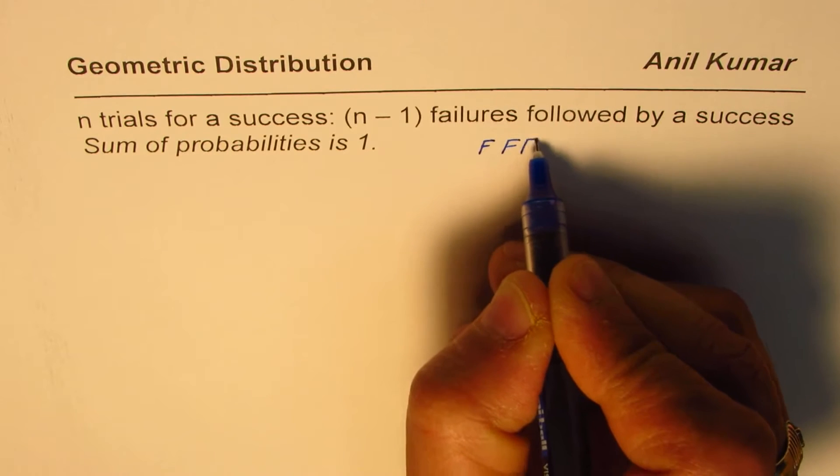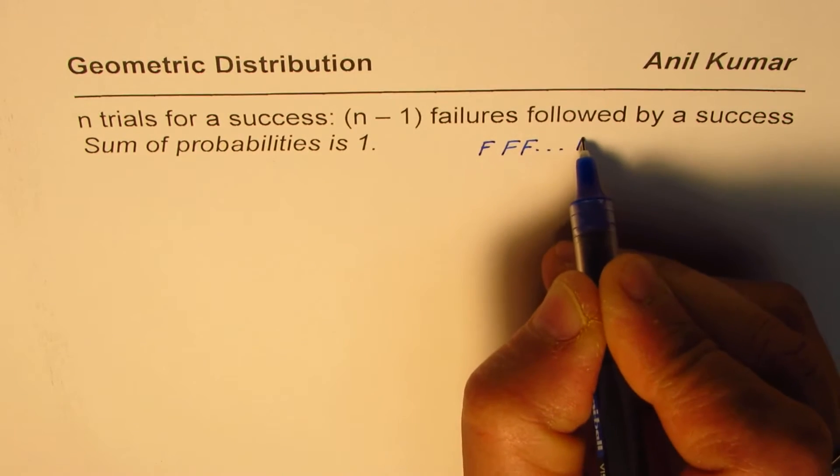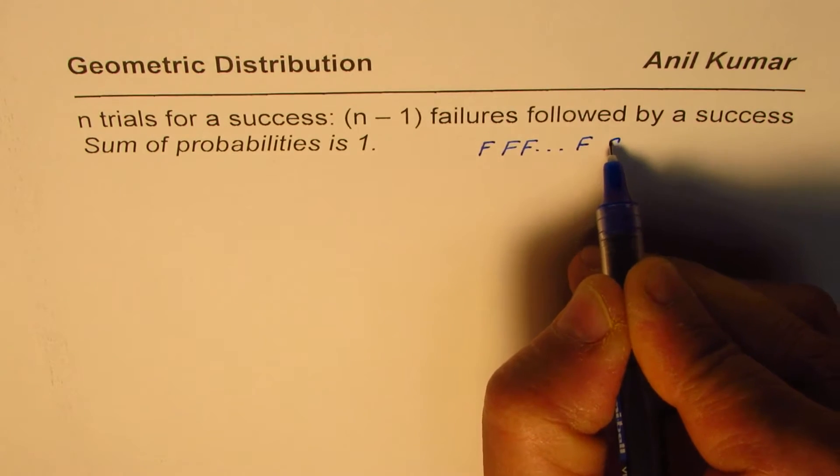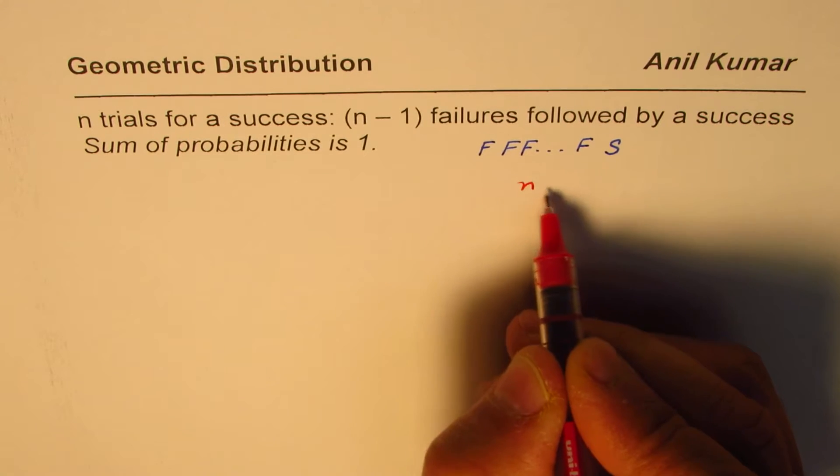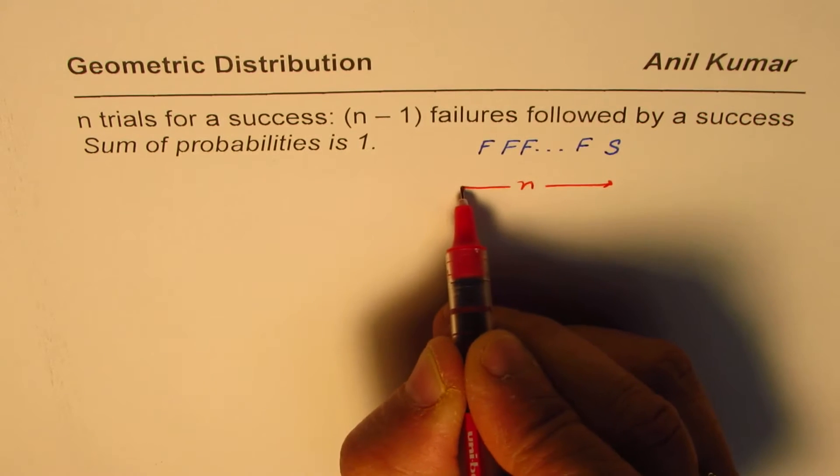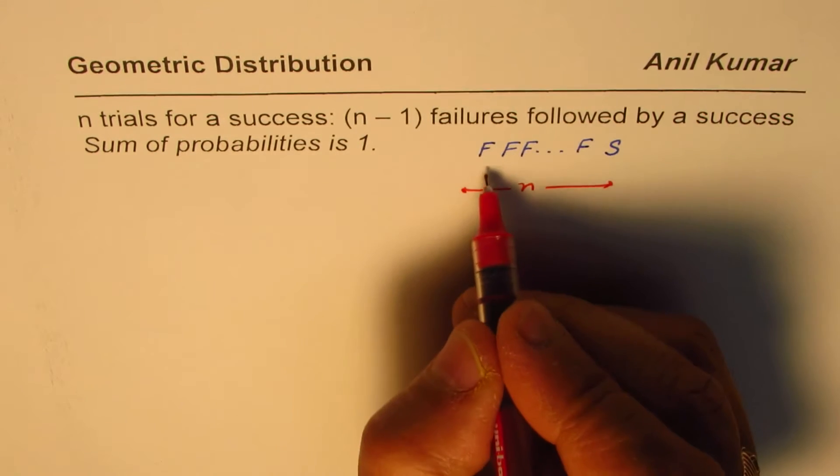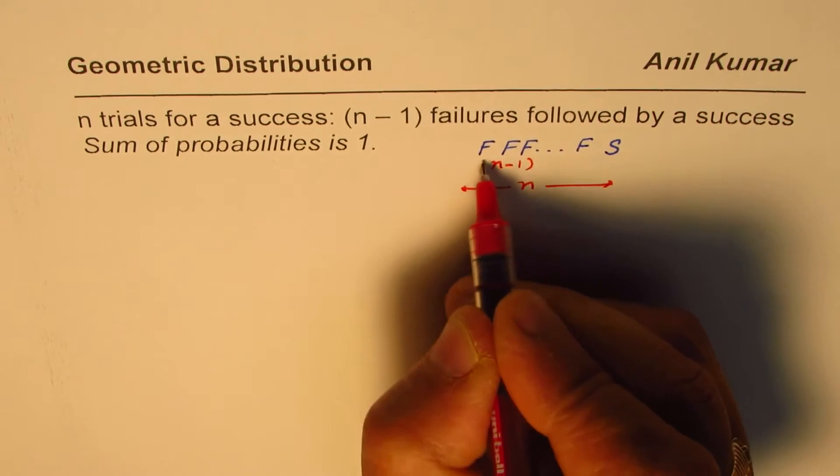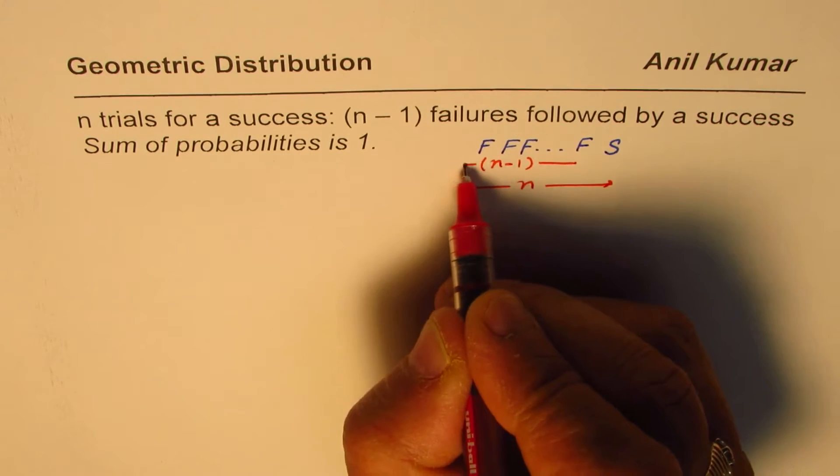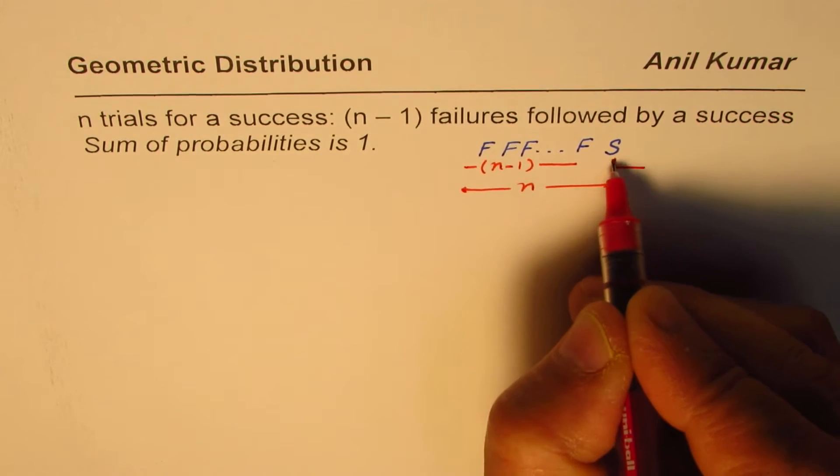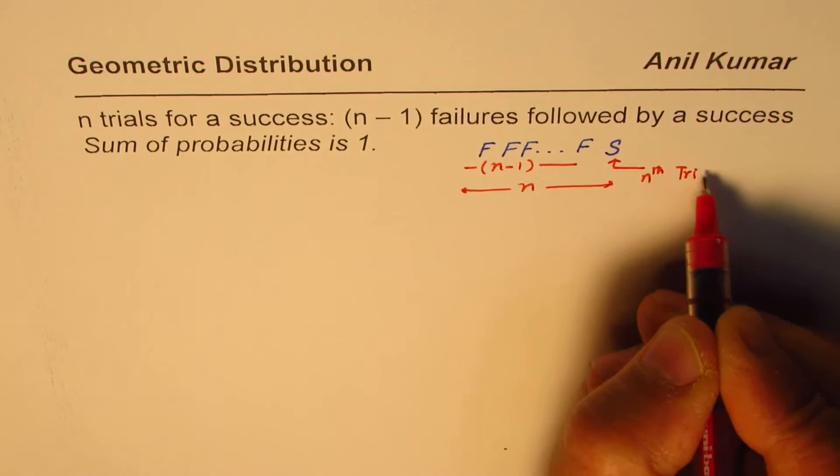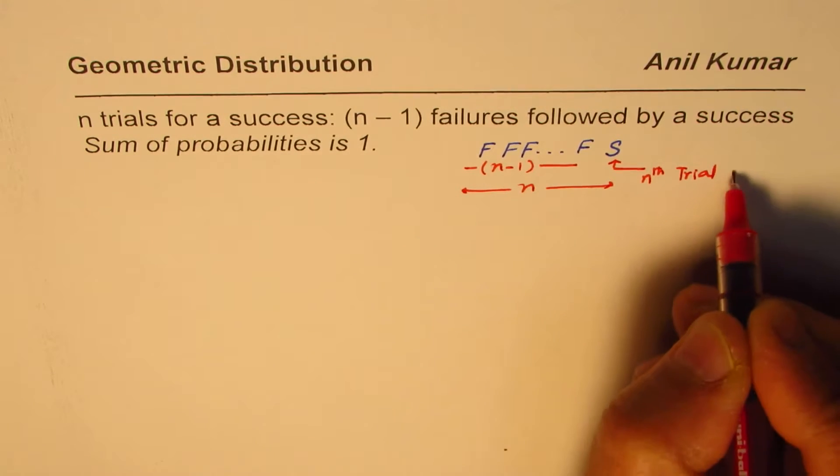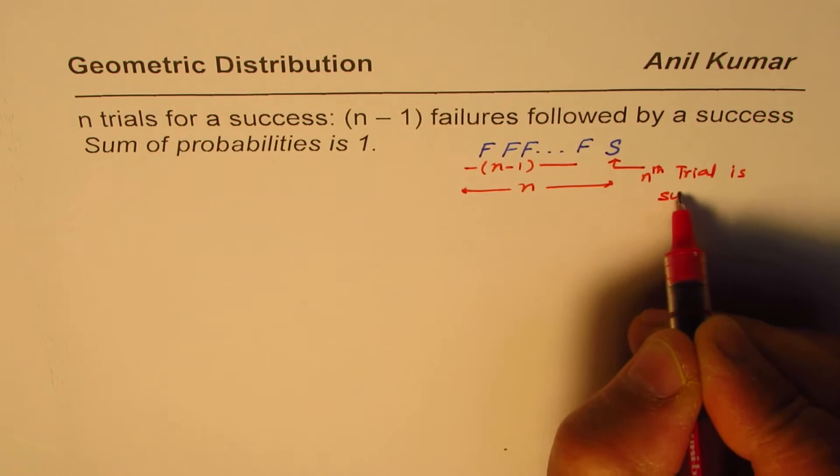Let's say failure, failure, failures, and so on. The series of failures is followed by a success. So when we say total number of trials is n, n is the total number of trials from here to there. Out of those n trials, n minus 1 are the failures. And the nth trial is a success.